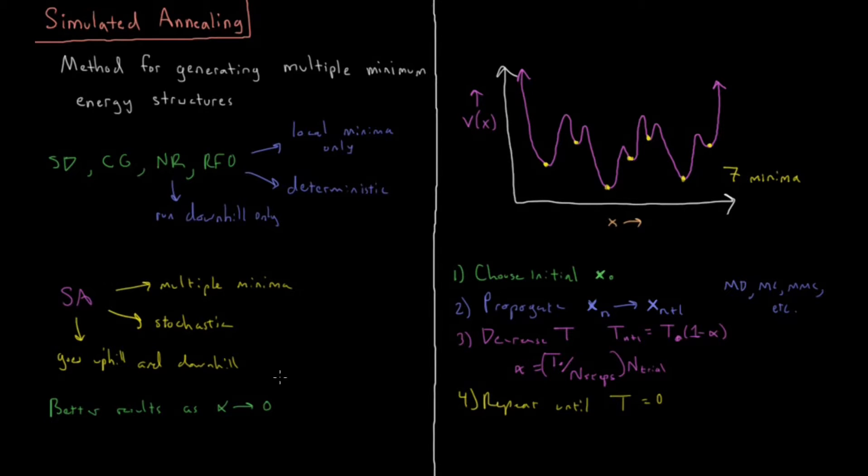So in the limit of choosing infinitely slow alpha, you'll get much better results than choosing a very large and very quick alpha.